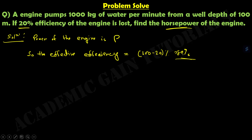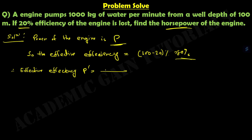Effective efficiency means the output efficiency. If I represent this effective efficiency as P prime, then P prime equals P into 80 by 100. We can rearrange this as P equals P prime into 100 by 80.